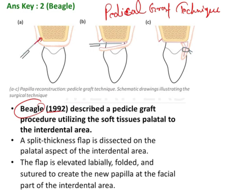First, you give an incision on the palatal aspect, then you raise a split thickness graft. Why a split thickness graft? So that there will be some connective tissue remaining. This connective tissue will have mesenchymal cells, capillaries, and blood supply, and undifferentiated cells that can give rise to further connective tissue as well as epithelium. This tissue will regenerate over a period of time.